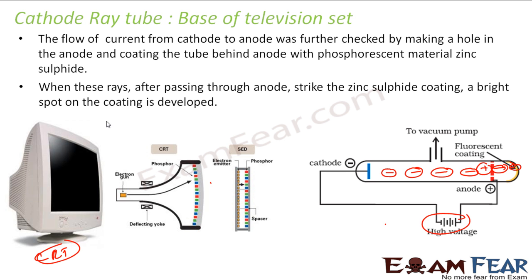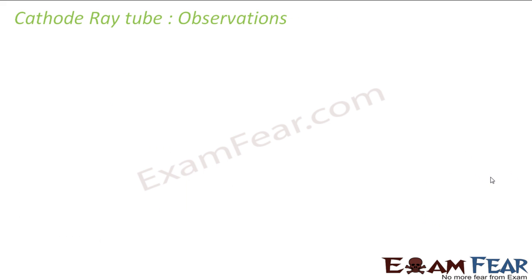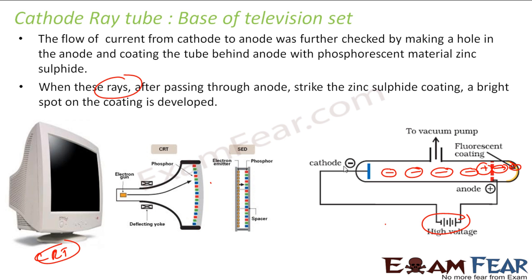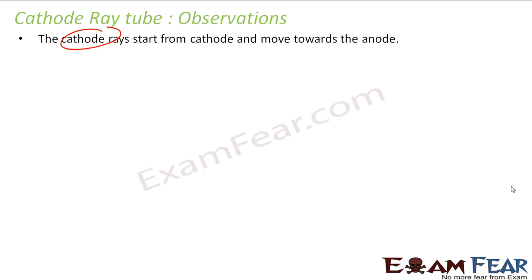After passing through the anode, these rays strike a zinc sulfide coating and a bright spot is developed. The observation was that the cathode rays start from cathode to anode — starting from the negative end toward the positive end, with the electron continuously moving.